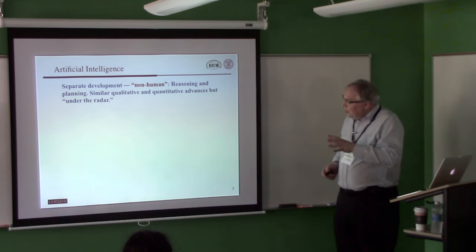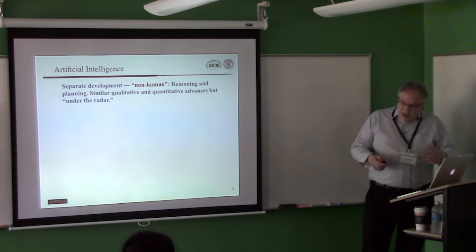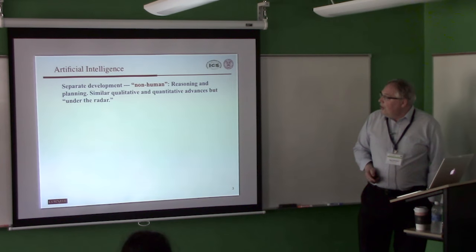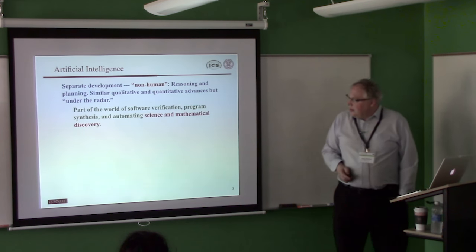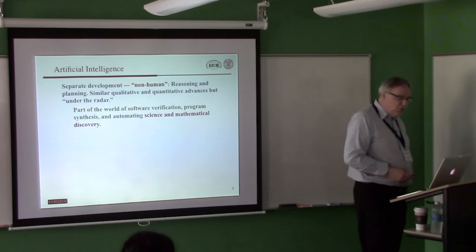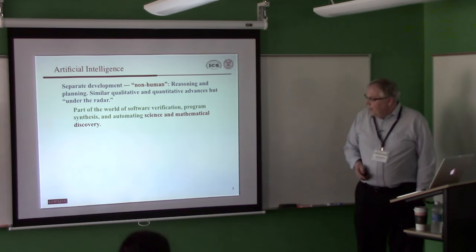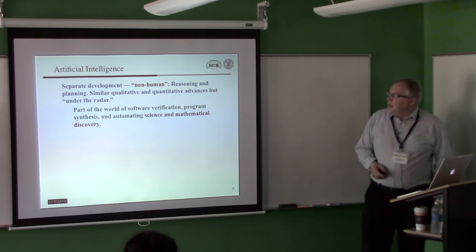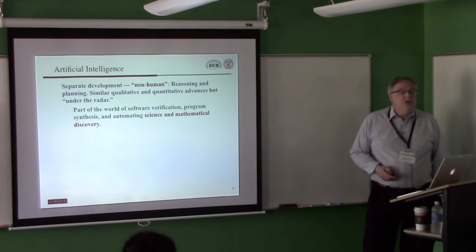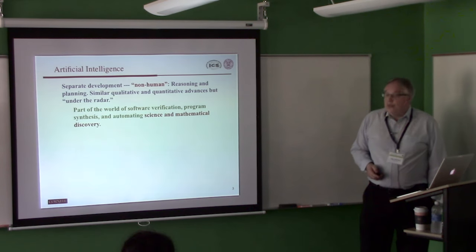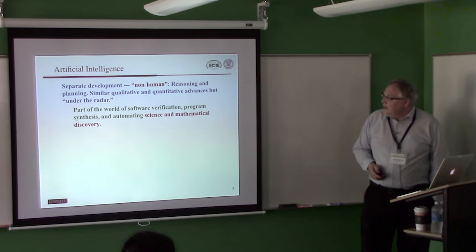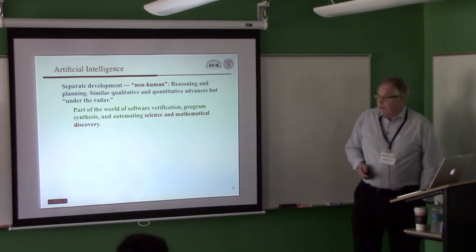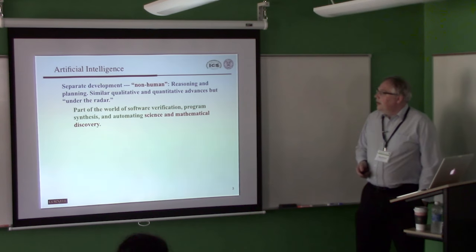I like to look at what I call non-human intelligence. It just gets less attention, but the advances also have been very interesting. And they're in reasoning and planning. So it's actually partly not getting as much attention in the AI world because it's more used in software verification, program synthesis, and I'll talk about automating science and mathematical discovery. So it's sort of other areas related to AI but not central part of AI that are using these reasoning technologies.